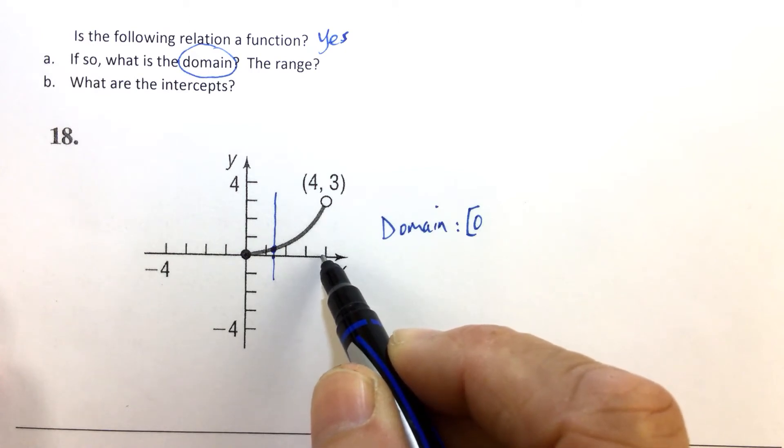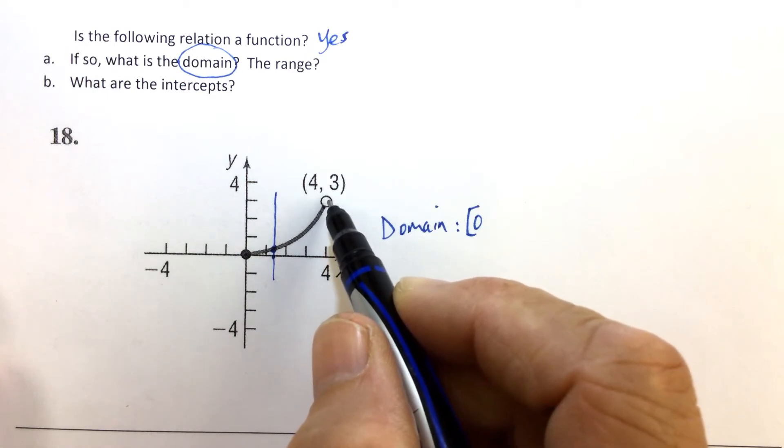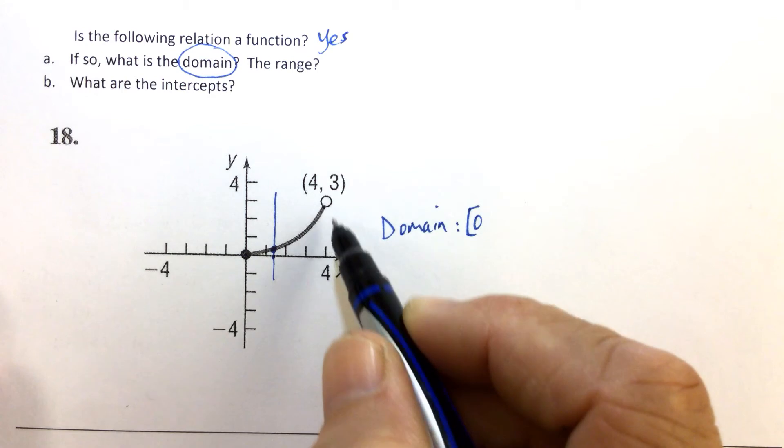What's the largest x-value that we're allowed to plug in? Well, we could plug in 3.9, 3.99, 3.999, and we would get a y-value out.